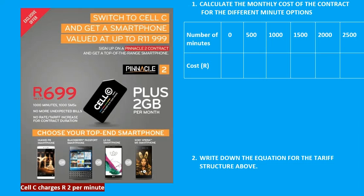We need to calculate a tariff for different options, looking at how many minutes of airtime a person would use. Let's answer the question on the right and fill in the table by determining how much a person would pay depending on how many minutes of airtime they've used in that month. Starting at zero — if a person does not use any minutes of airtime, they will just pay R699 for the contract.